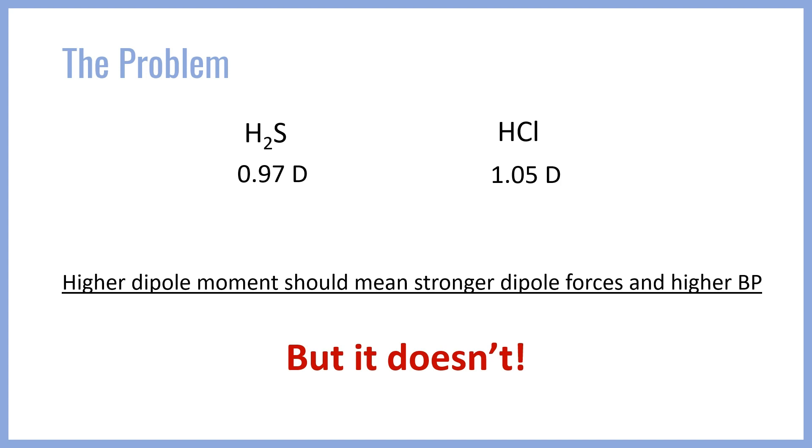This sort of breaks down our understanding of what is going on here. In most compounds, as we move towards the right-hand side of the periodic table, as the electronegativity difference increases, the strength of the dipole-dipole forces increases and therefore the boiling point does as well. So what's going on here? Why does hydrogen sulfide have a boiling point that's almost 20 degrees higher than hydrogen chloride when it's actually less polar?